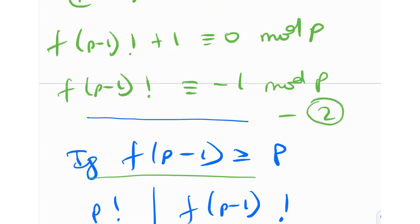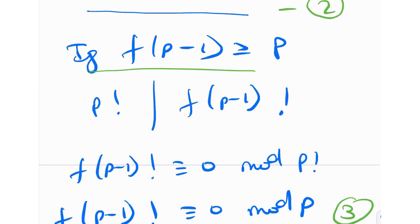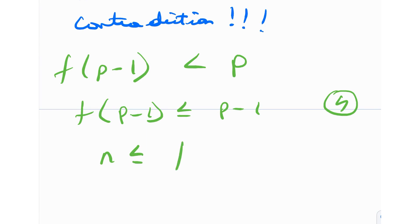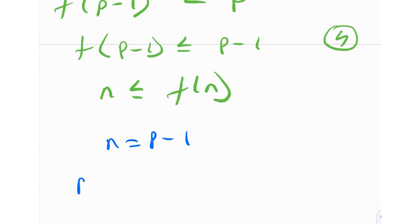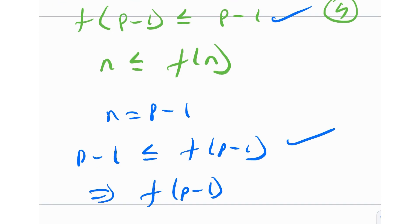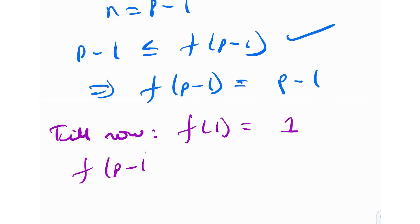But from our earlier result, n ≤ f(n) for all natural numbers n. If I put n = p − 1, I get p − 1 ≤ f(p − 1). Combined with equation 4 which says f(p−1) ≤ p−1, the inequalities squeeze to give f(p−1) = p−1. So we have now made quite a bit of progress: f(1) = 1 and f(p−1) = p−1 for all primes p.